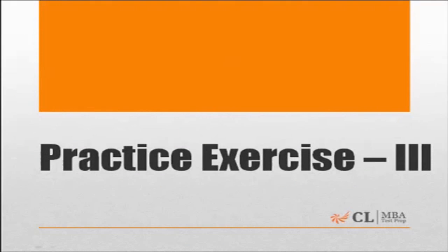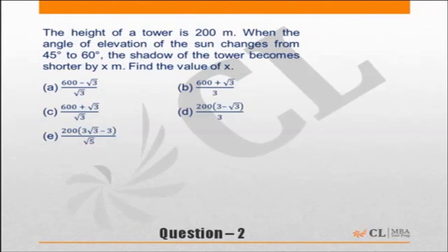Practice exercise 3, question 2. The height of a tower is 200 meters. When the angle of elevation of the sun changes from 45 degrees to 60 degrees, the shadow of the tower becomes shorter by x meters. So first, draw that 200 meter height. One angle will be...